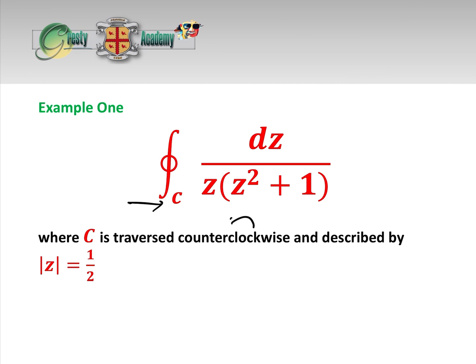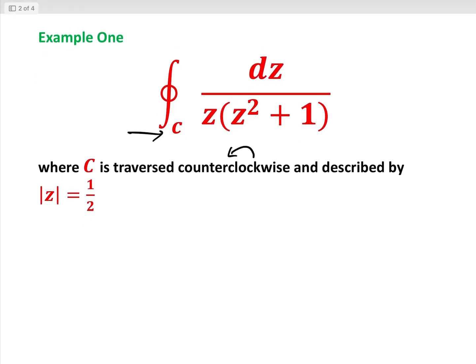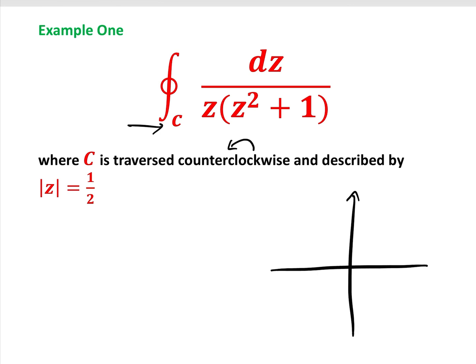Example 1 is the integral around the curve C of dz over z(z² + 1), where C is traversed counterclockwise and described by |z| = 1/2. That is just a circle around the origin on our Argand diagram, where this point is 1/2 and this point is i/2. We want to see which of the singularities or poles lies within this region, then use the residue theorem to sum them up.